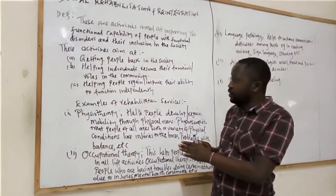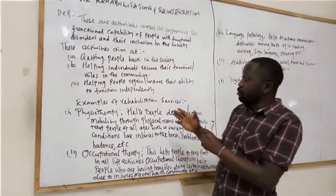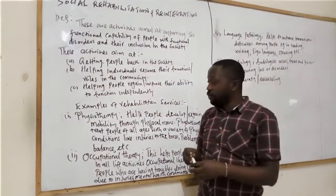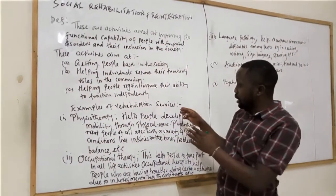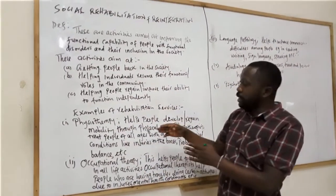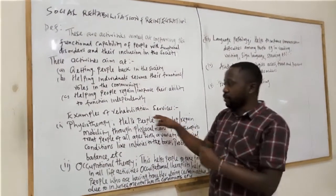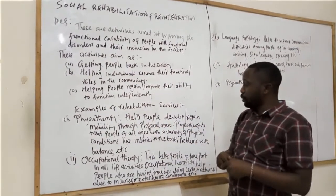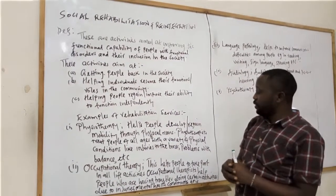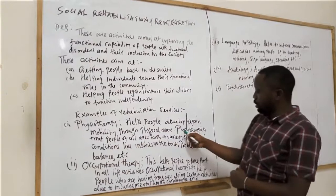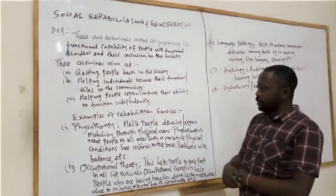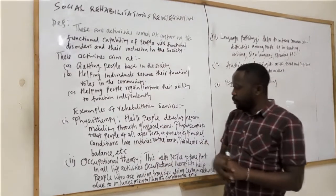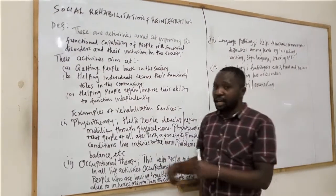We do not want a scenario where they are relying on others for everything. There is something we can offer so that they can do things independently, work by themselves, and handle activities by themselves. Examples of rehabilitation services that can be offered differ depending on the situation being addressed. The first one is physiotherapy services. These are services offered to help people develop or regain their mobility through physical means. The physiotherapists are the professionals involved in treating people of all ages with a variety of physical conditions, such as injuries to the bones or problems with balance and coordination.